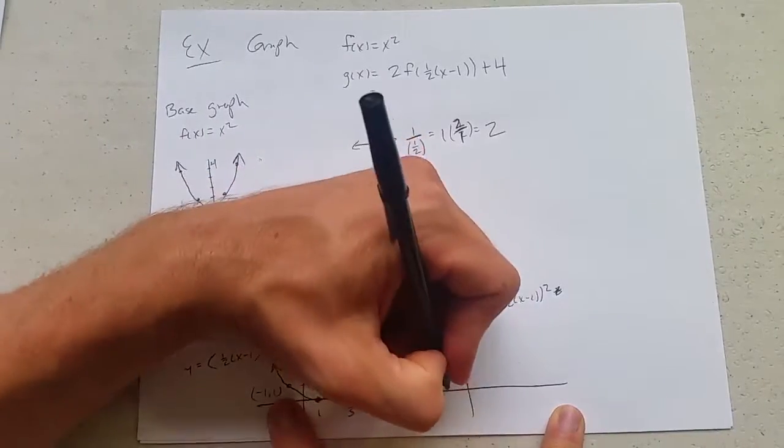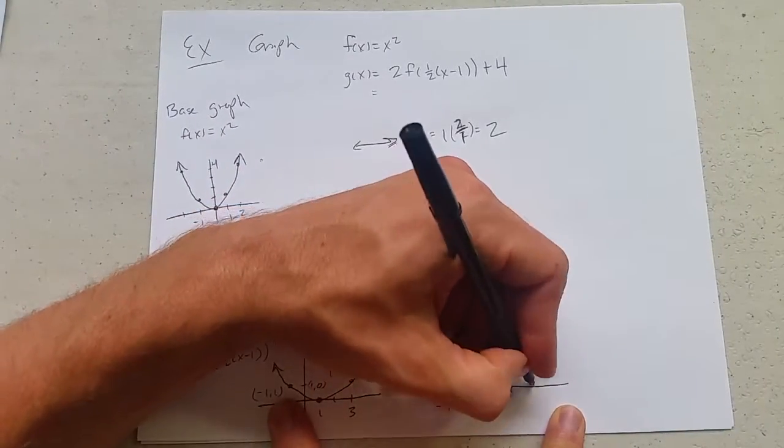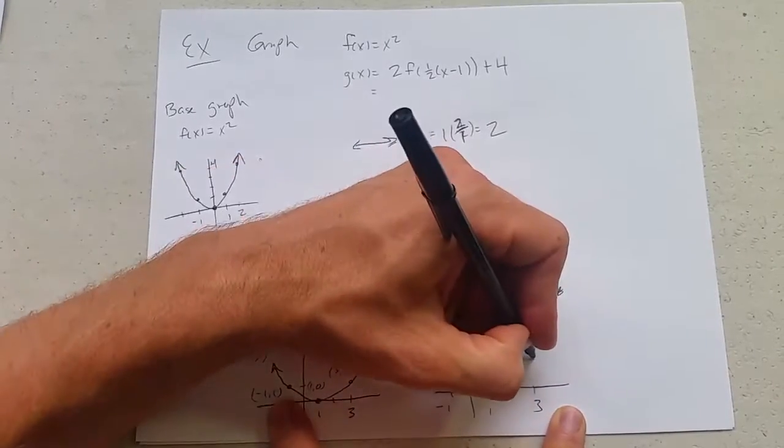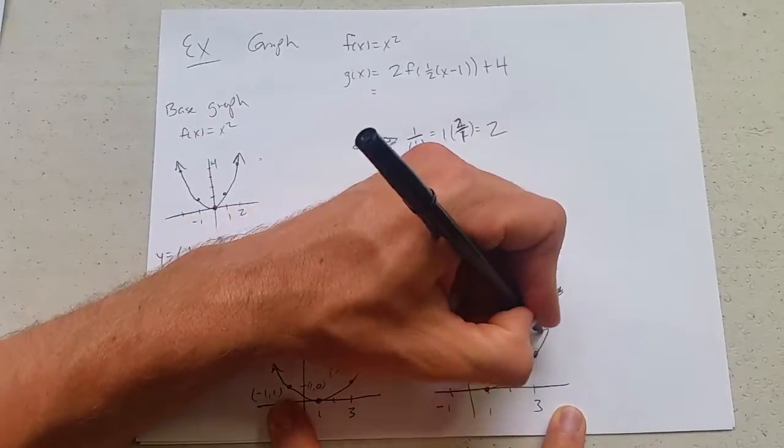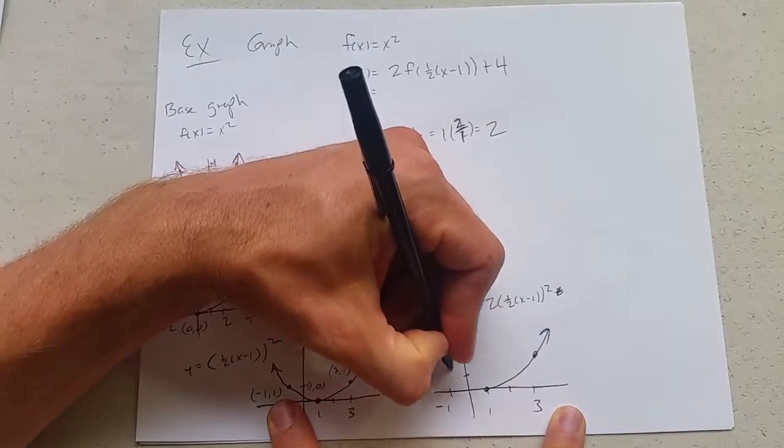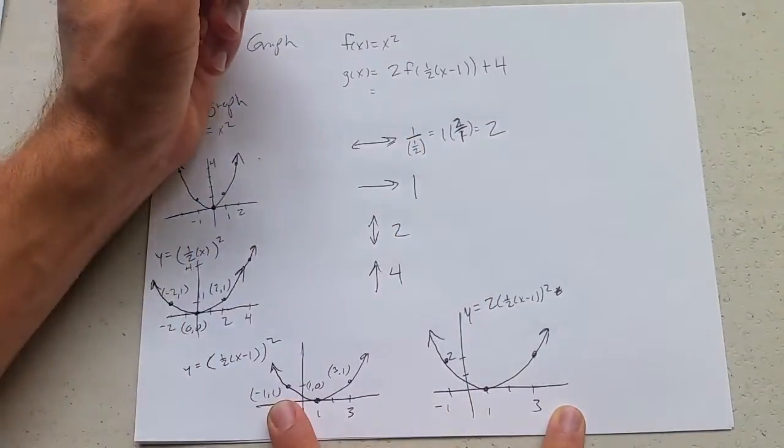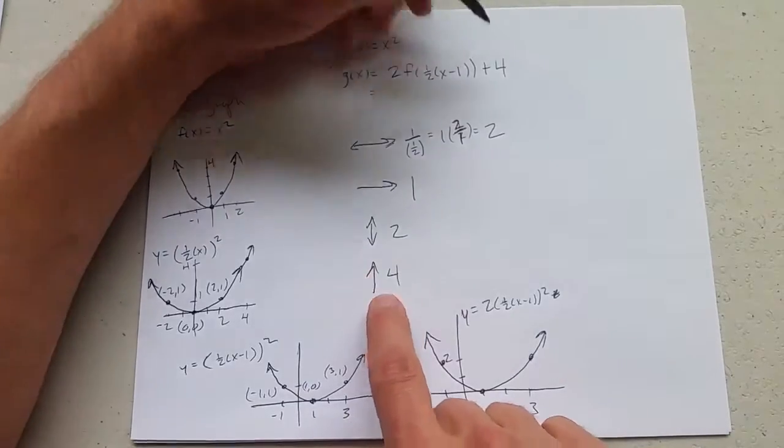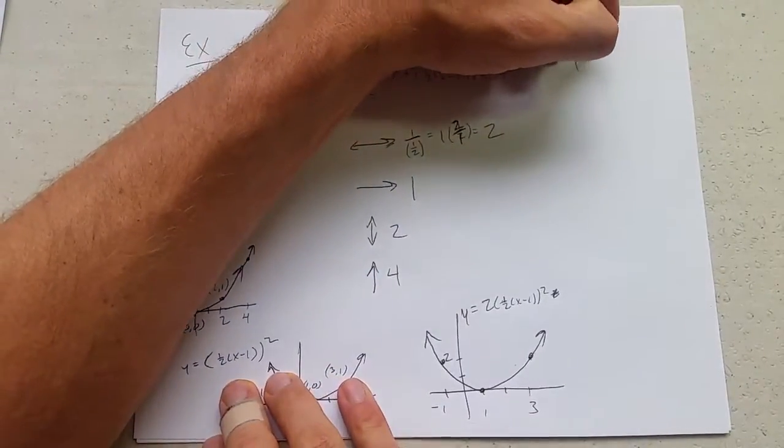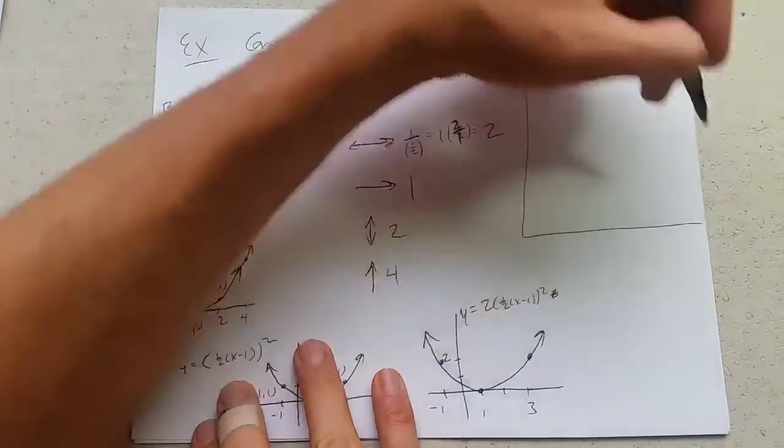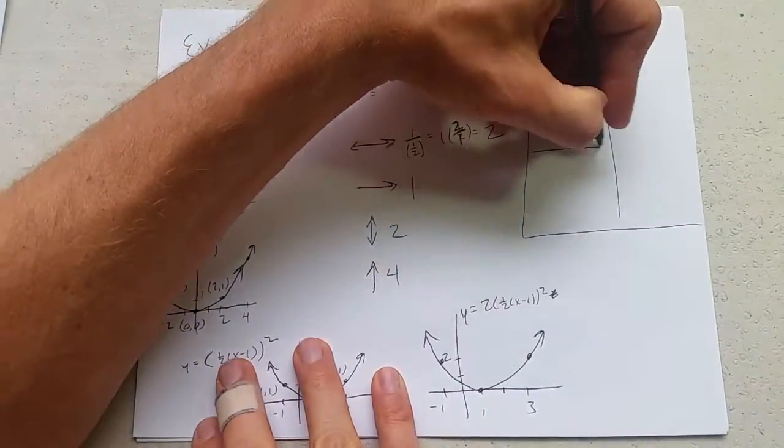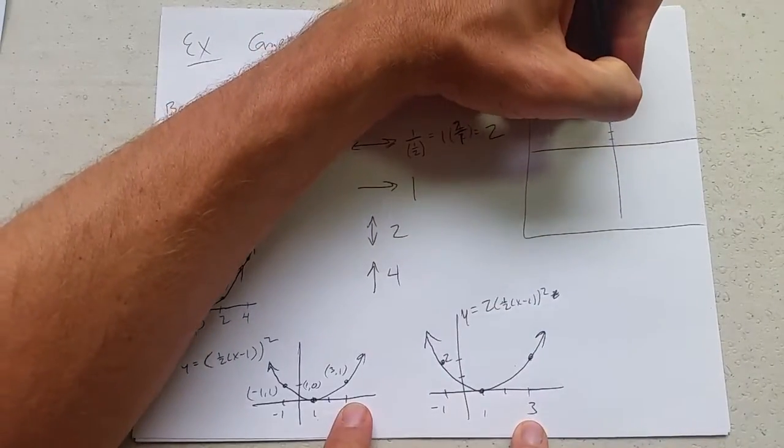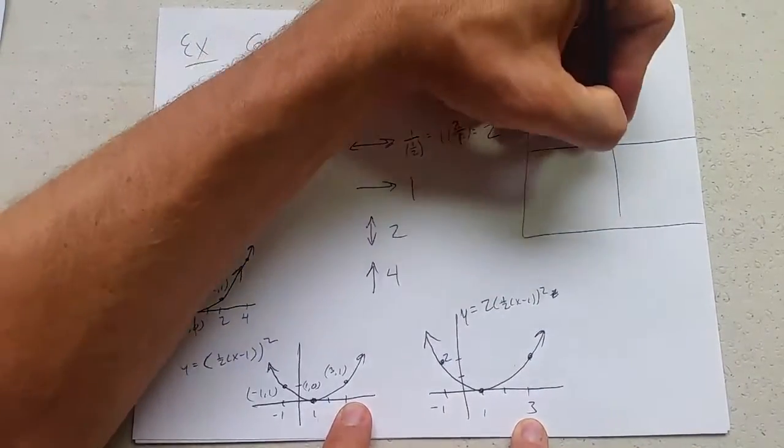So we're going to take our y values and double them. And there's our new graph. And last we're going to graph our full graph right here. We'll write our final answer right here. We're going to go up four, probably should leave a little more room. So there's four.